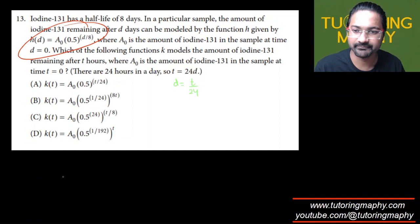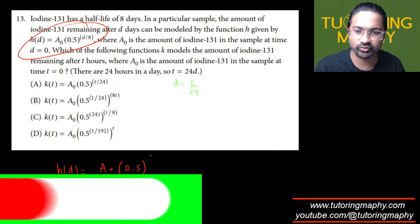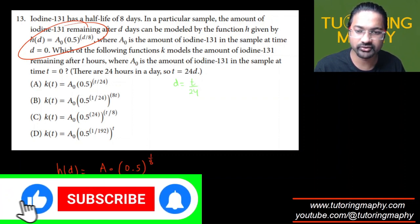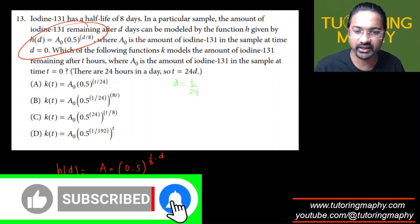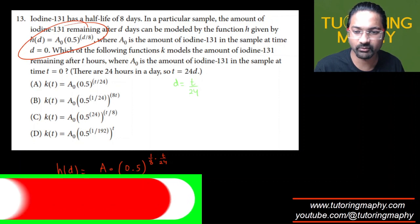So this is going to look like h of d will be equal to A₀ times 0.5 raised to d over 8. So d over 8 can be written as 1 over 8 times d. And this d can be written as t over 24. Right.